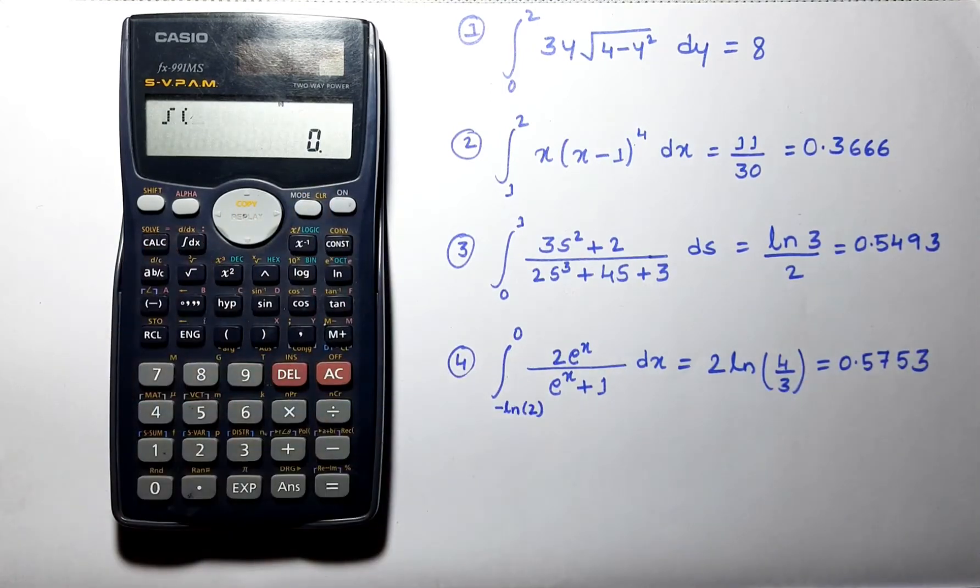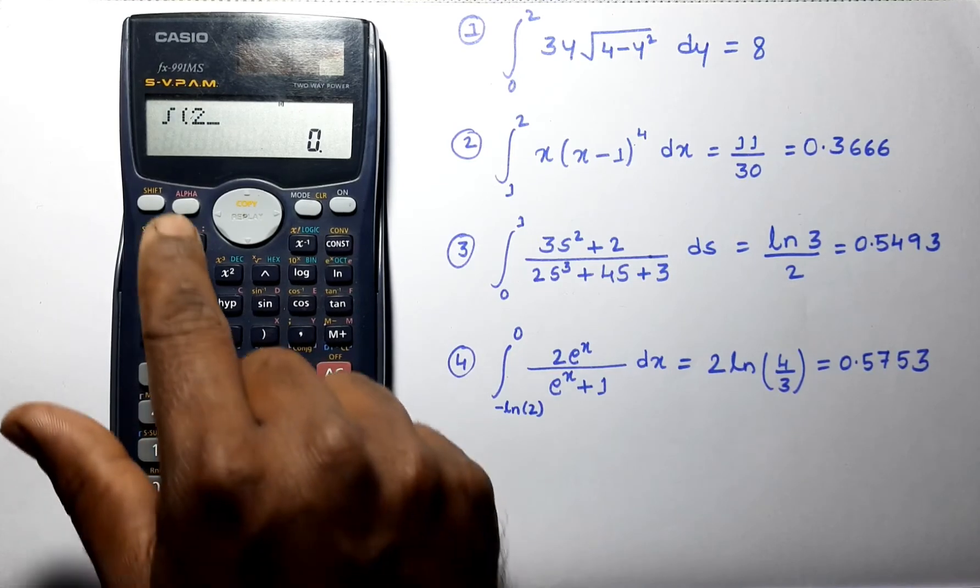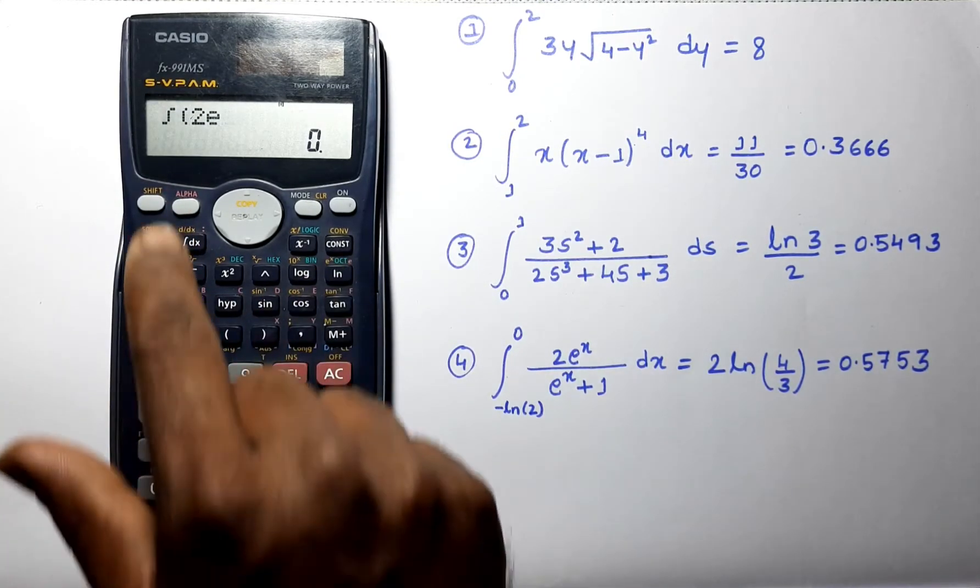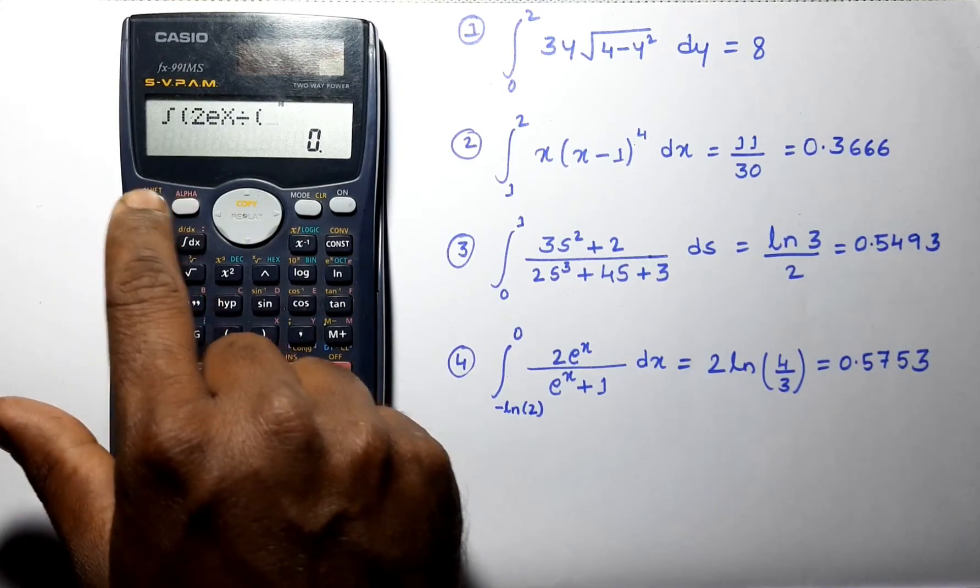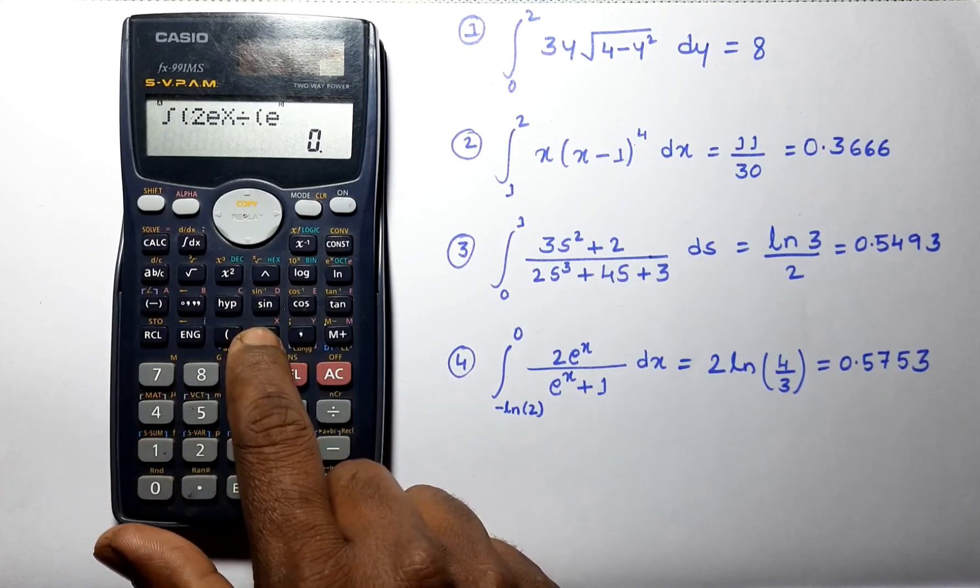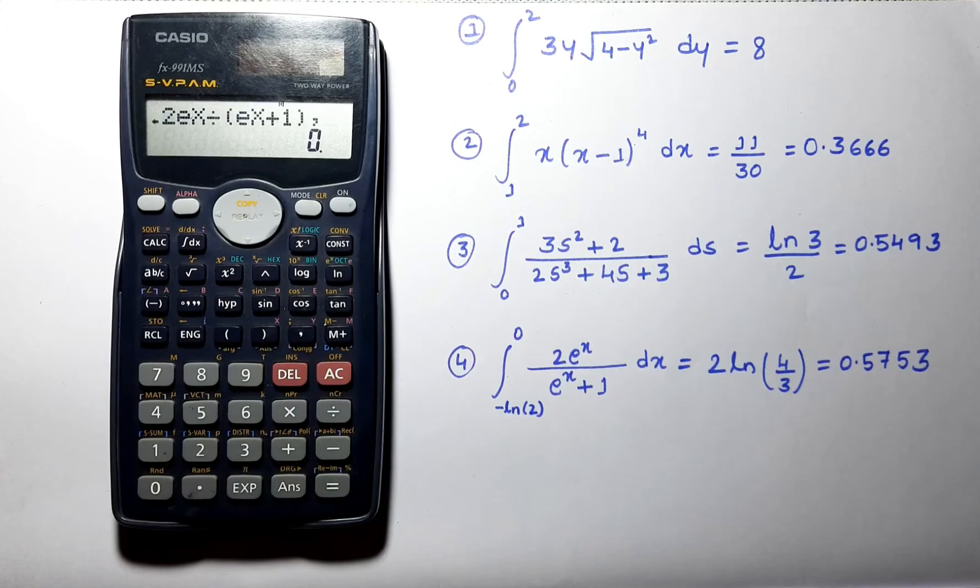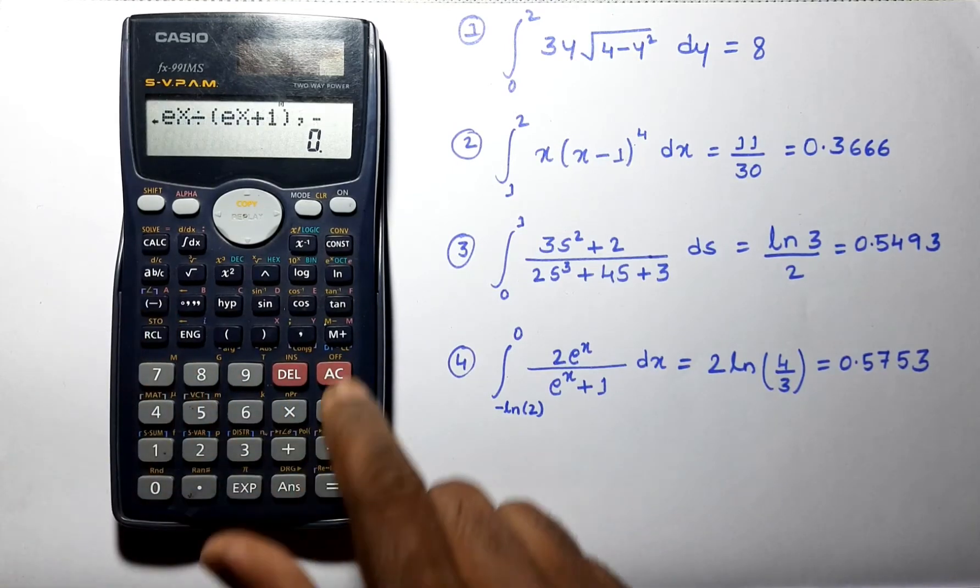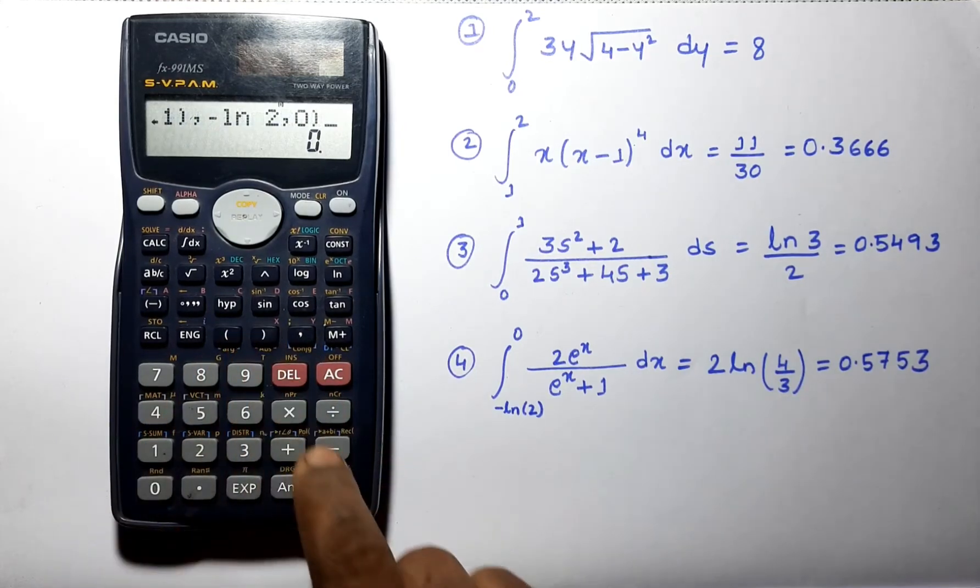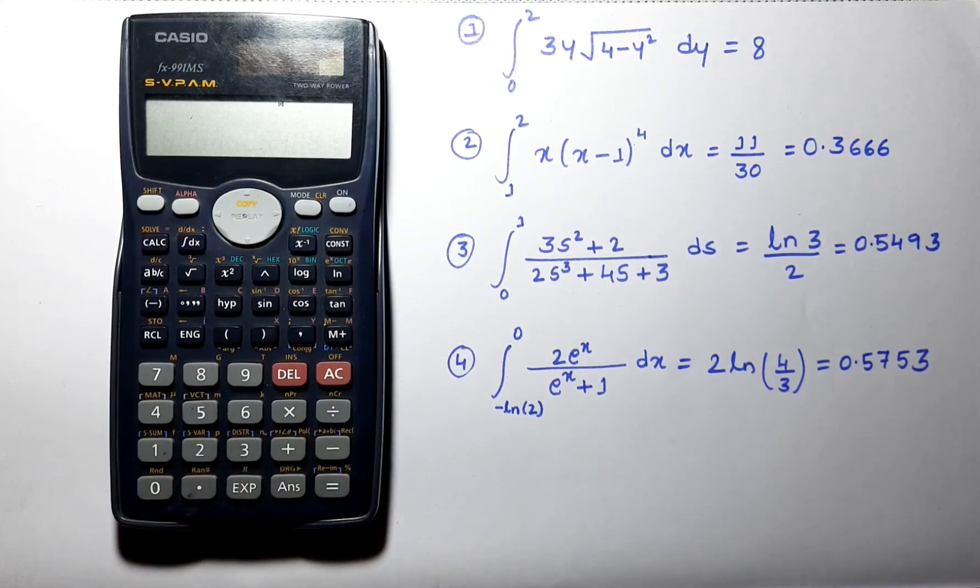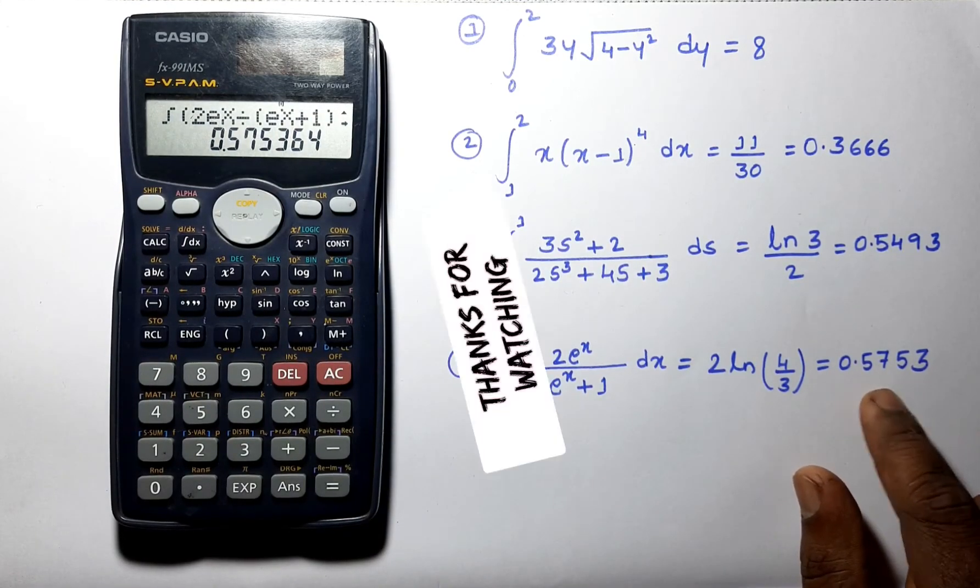Let us solve next problem, which is 2 into e power x divided by e power x plus 1. The limit varies from minus natural logarithm of 2 to 0, and you can check your answer here, which is 0.5753.